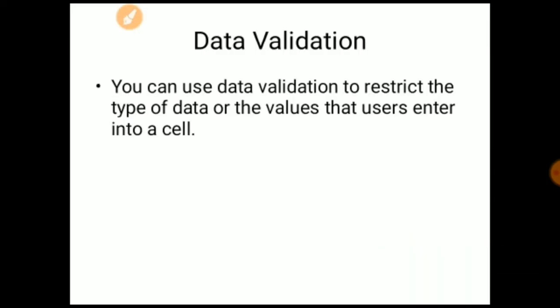Now we come to the next topic, that is Data Validation. What is the meaning of data validation? You can use data validation to restrict the type of data or the values that a user enters into a cell. Data validation means the validity of your data — you have to set some criteria to bound your data. For example, you may want to check the result of a student who got marks between 35 to 70. That is your data validity.